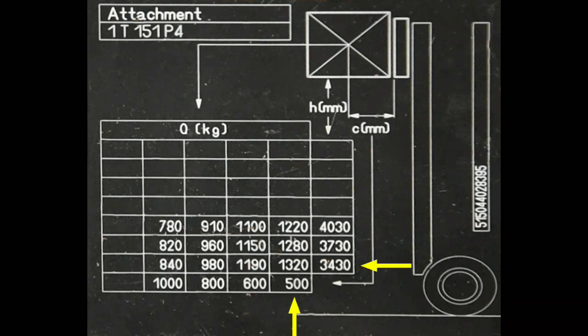And again we've lost that height, so at our new maximum height of 4030 millimeters, just over 4 meters, we now have a capacity of 1.22 ton or 1220 kilos.